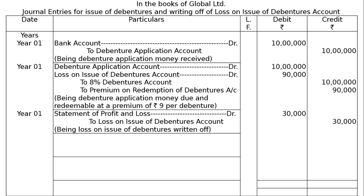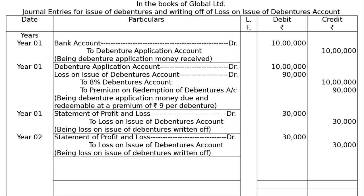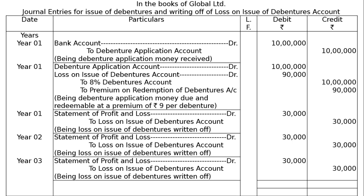In year 2, the same entry will be repeated with the same amount, and again in year 3, with the journal entries totalling Rs 21,80,000 overall.